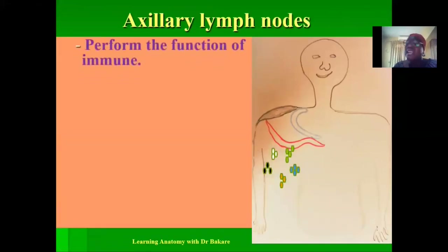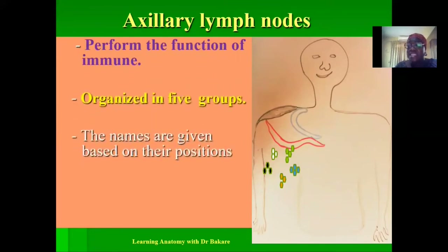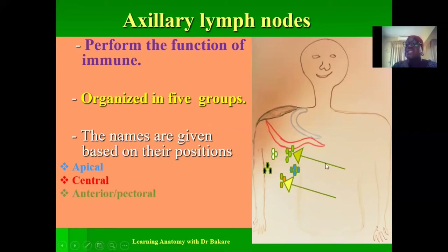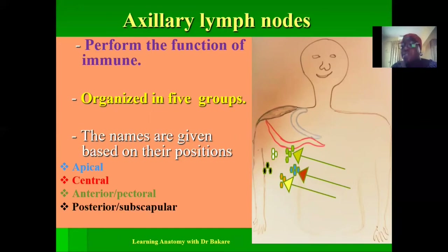The axillary lymph nodes are arranged in five groups, named based on their location within the axilla. We have the apical axillary lymph nodes at the apex, the central axillary lymph nodes centrally, the anterior or pectoral lymph nodes near the pectoralis muscle, the posterior or subscapular lymph nodes behind, and the lateral lymph nodes located laterally. Their function is to perform immune function.